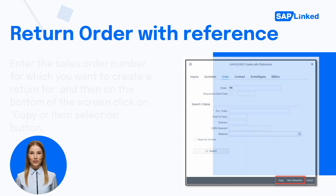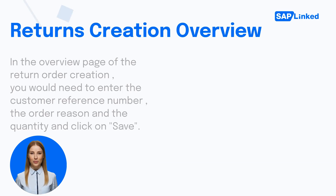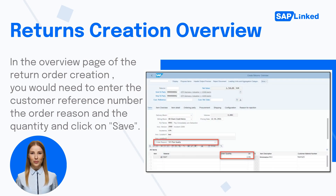On the next screen, enter the sales order number for which you want to create a return and click on the Copy or Item Selection button. You will then be taken to the overview page of return order creation. In this overview page, enter the customer reference number, the order reason, and the quantity, then click Save. This completes the creation of the return order.